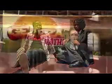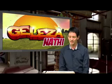So what is your learner question for today related to mathematics? How does the present annuity formula work when payment is not made one month after the loan? That is the question. How does the present value annuity formula work when payment is not made one month after the loan?